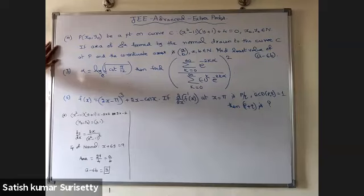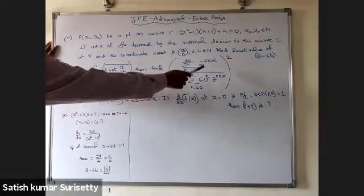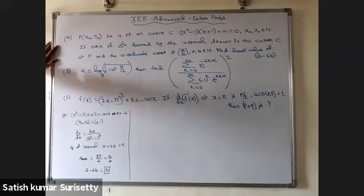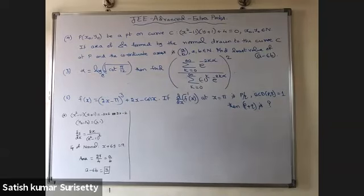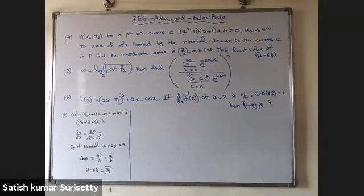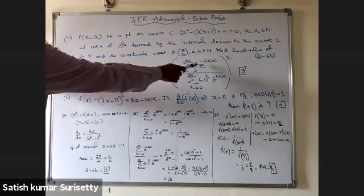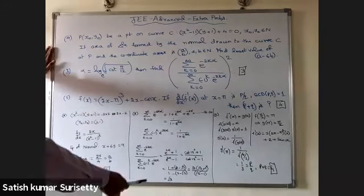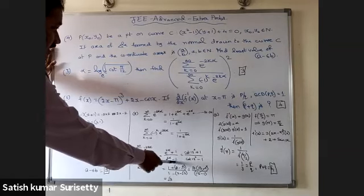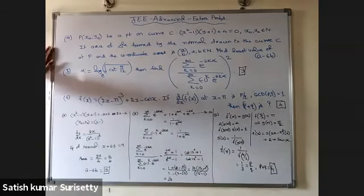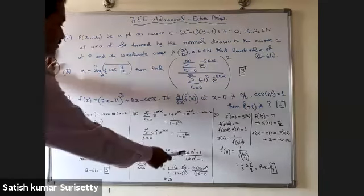For the fifth problem, the numerator is an infinite geometric progression and the denominator is also an infinite GP. Simplify both using the infinite GP formula, then substitute α. After simplification you get (e^(2α) + 1) / (e^(2α) − 1) inside, then take the square. Substitute e^(2α) = cot 15°.